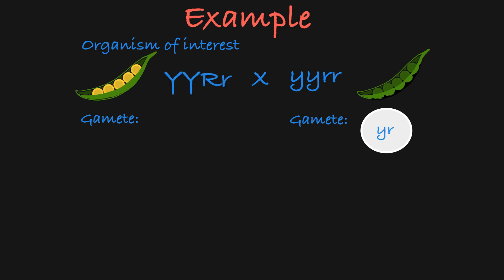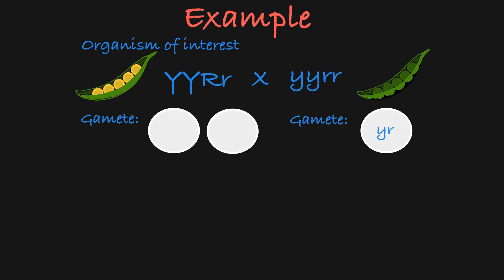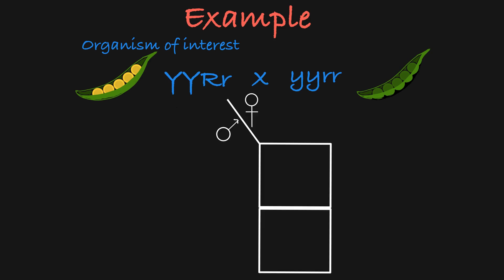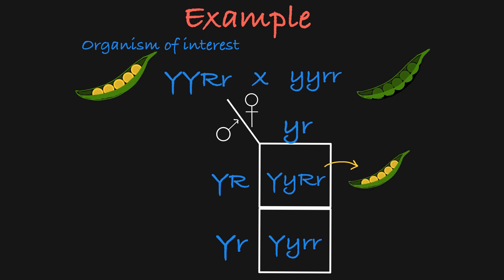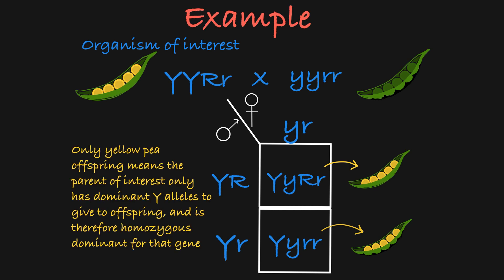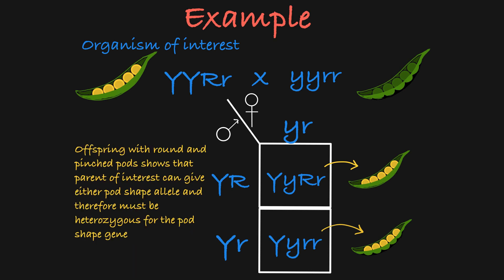If our parent of interest has this genotype, then it can produce two different gametes. It will always pass on the dominant pea color allele, but it can pass on either the dominant or the recessive pod shape alleles. As such, the offspring can either have this genotype or this genotype. So we will see offspring that have both dominant phenotypes — yellow peas and round pods — and offspring that have the dominant yellow pea color and the recessive pinched pod shape. Seeing only yellow pea offspring tells you the parent is only giving dominant yellow alleles. Seeing both round and pinched pods tells you the parent can give either the dominant or recessive allele and therefore must be heterozygous for the pod shape gene.